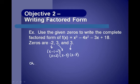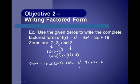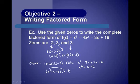We can check this by multiplying it out. Taking the first two binomials and FOILing: we get x squared minus 3x plus 2x minus 6, which simplifies to x squared minus x minus 6. Then we take that answer, x squared minus x minus 6, and multiply it by the remaining factor of x minus 3. Multiplying everything: x to the third minus 3x squared.